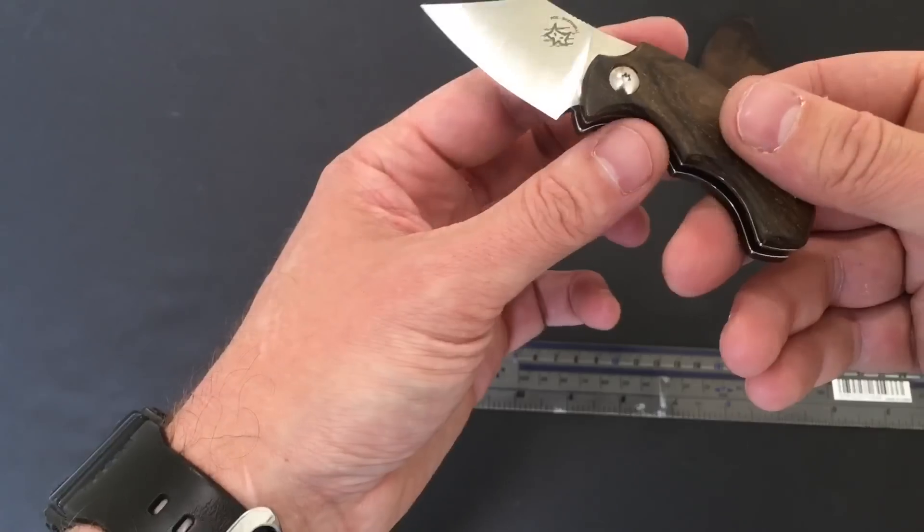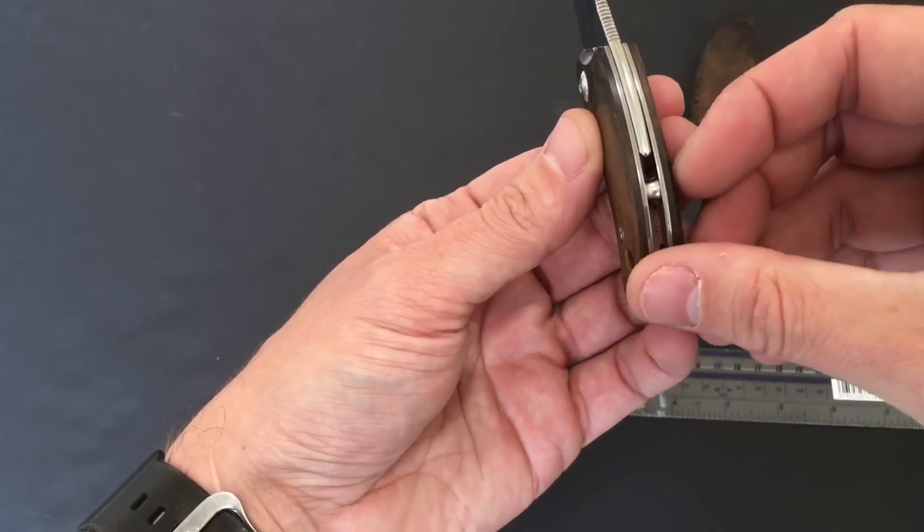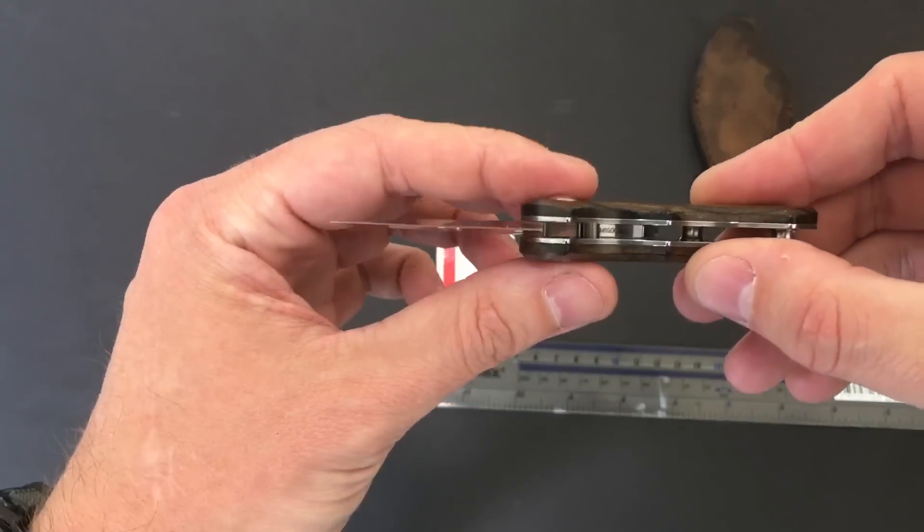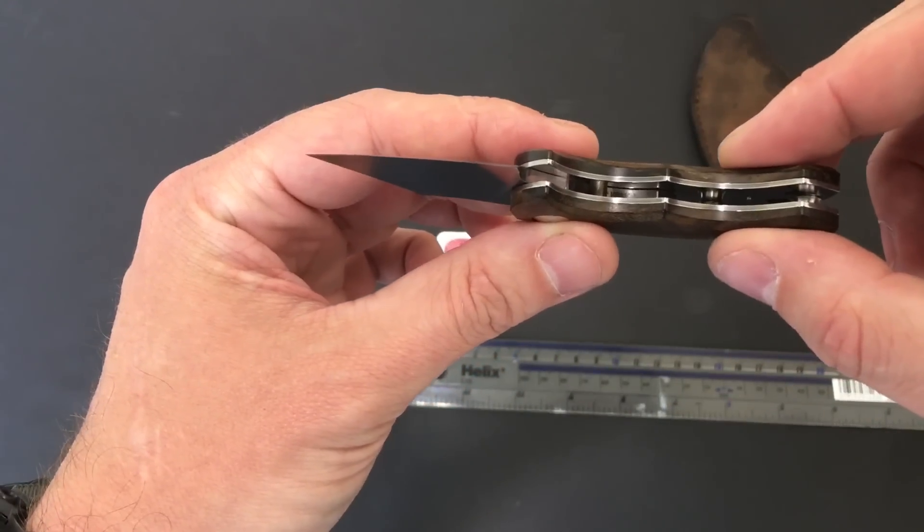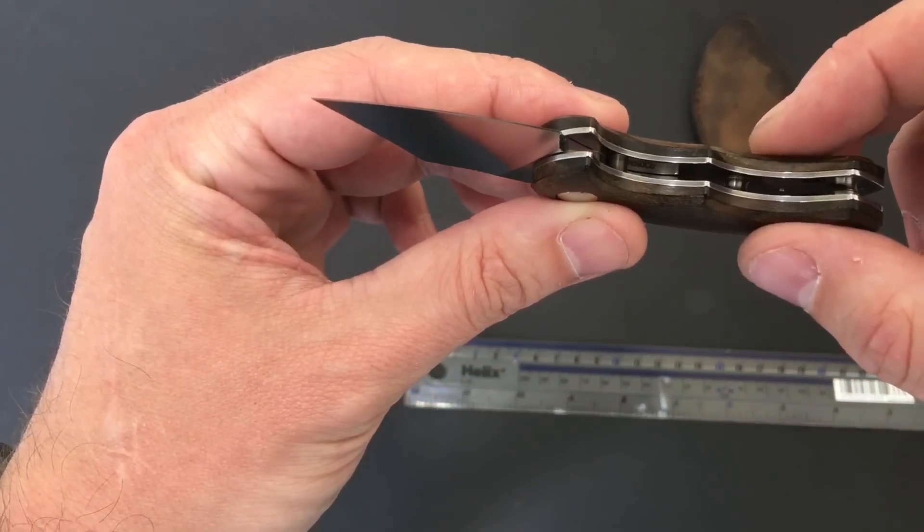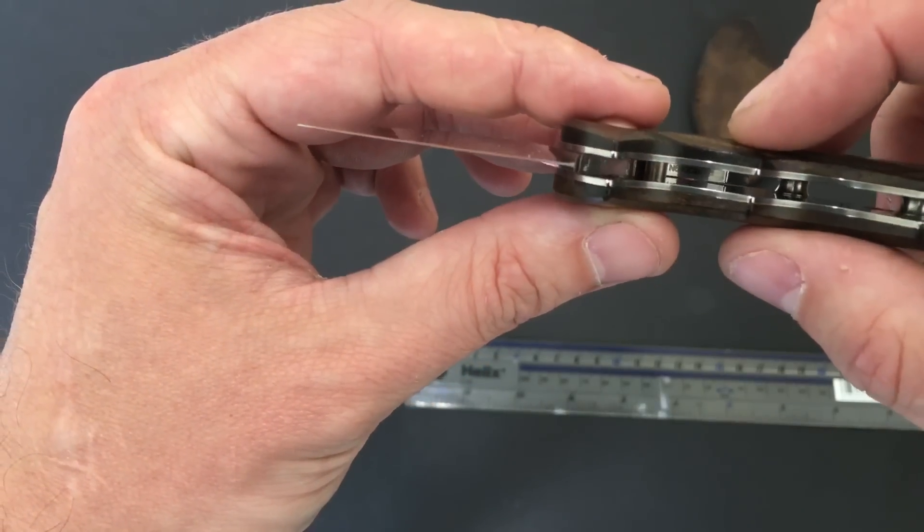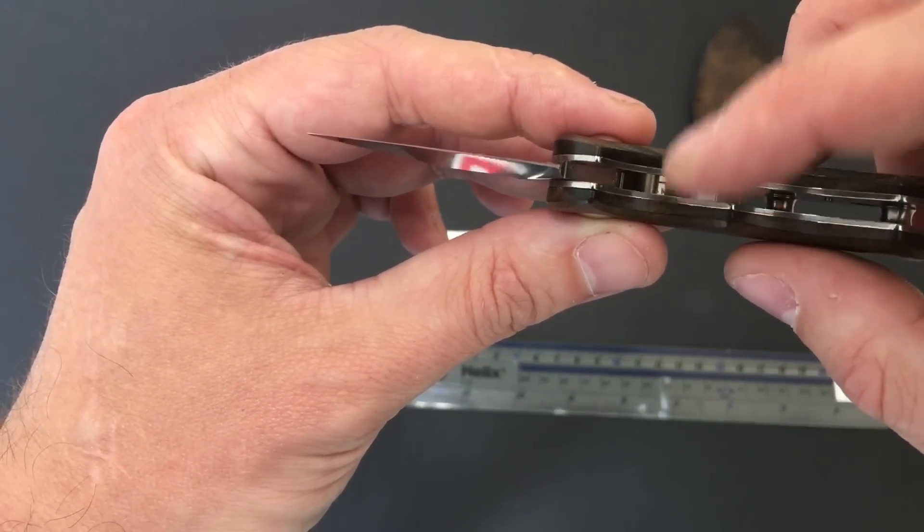Jimping on the back, Santos wood scales. We've got stainless spacers on there as well, and steel liners. Even stamped up in there as N690 as well. You can probably just make that out on the camera.